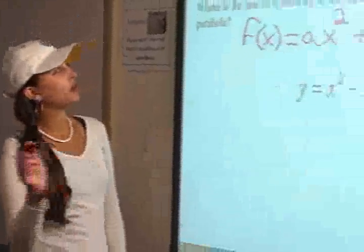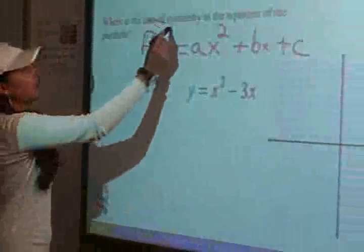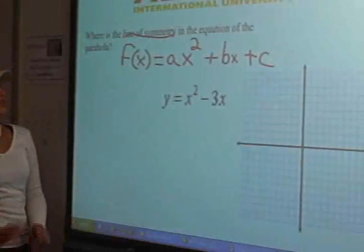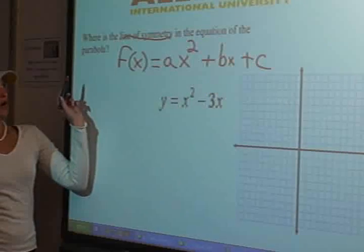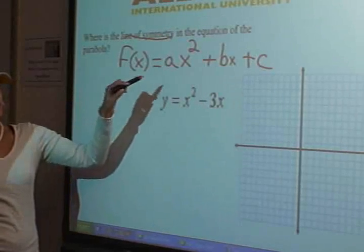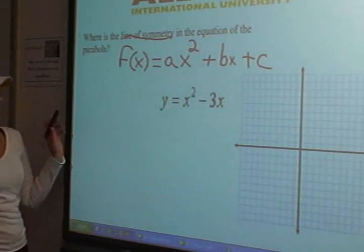Hey guys, today we are going to find the line of symmetry in the equation of the parabola. And this is our equation here. We're using our f of x equals ax squared plus bx plus c to solve.